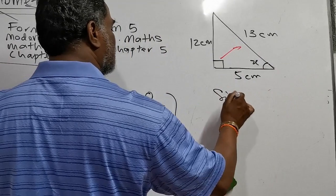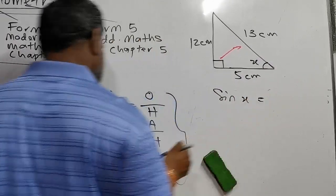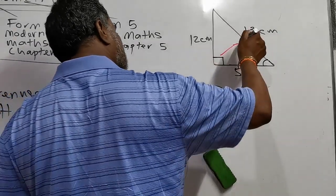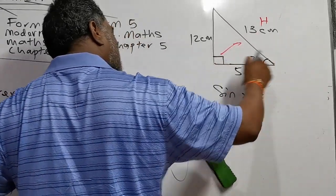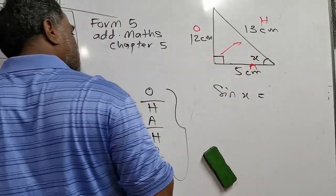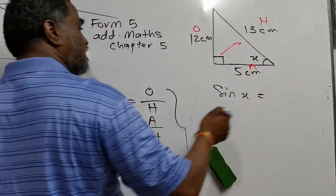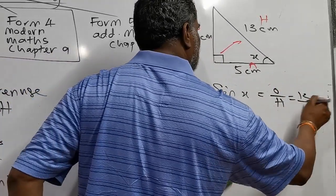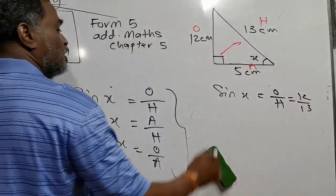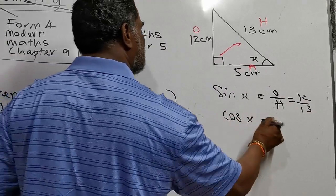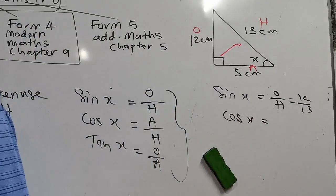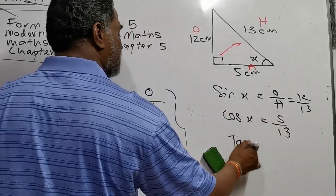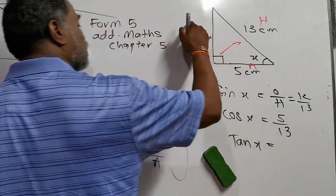Now to find sin x: sin is opposite over hypotenuse. Opposite is 12, hypotenuse is 13. For cos x: cos is adjacent over hypotenuse — adjacent is 5, hypotenuse is 13. For tangent x: tangent is opposite over adjacent, so that is 12 over 5.